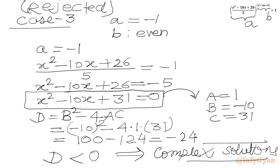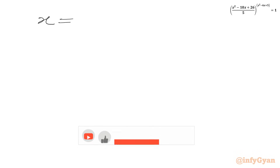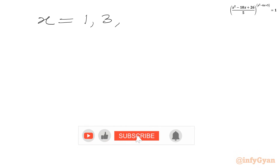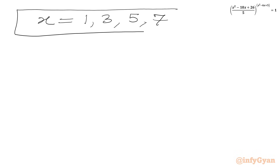From case 1 and case 2 we have solutions 3, 7, 1, and 5. So I can write here: there are only 4 solutions — 1, 3, 5, and 7 — for our exponential equation. I hope friends you will like this video. Thank you so very much for watching. Do not forget to like, share, and subscribe. Bye bye till next video.